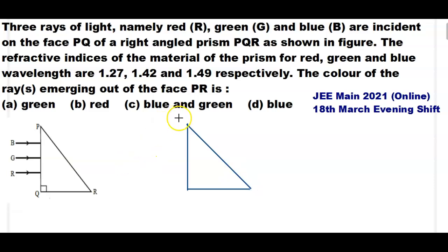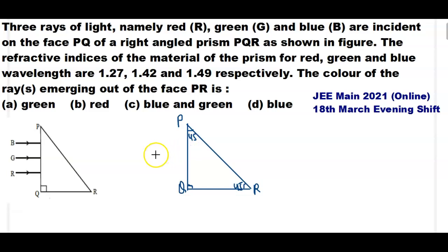Here we have given a right angle isosceles prism PQR. The right angle is 90 degrees, so the other two angles are each 45 degrees. The incident rays fall normally on the surface PQ.